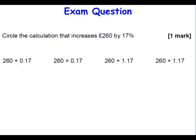Here's an exam style question: circle the calculation that increases £260 by 17%. We know multiplying by 1 keeps the same amount, and 17% is the decimal 0.17. So it has to be the original amount times 1.17. To increase something by 17%, 260 times 1.17 would get you the marks.